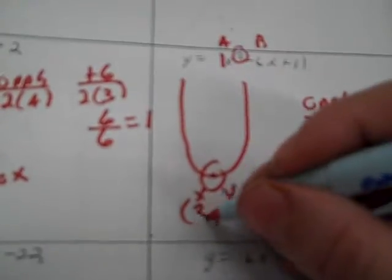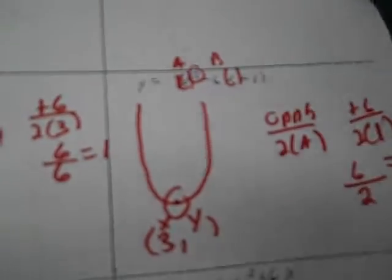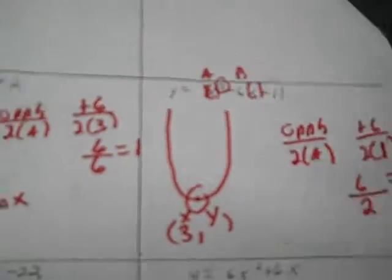To find the y coordinate, I replace all x's with 3. So: 1 times 3 to the second power, minus 6 times 3, plus 11 — and I get 2. So my vertex is (3, 2).